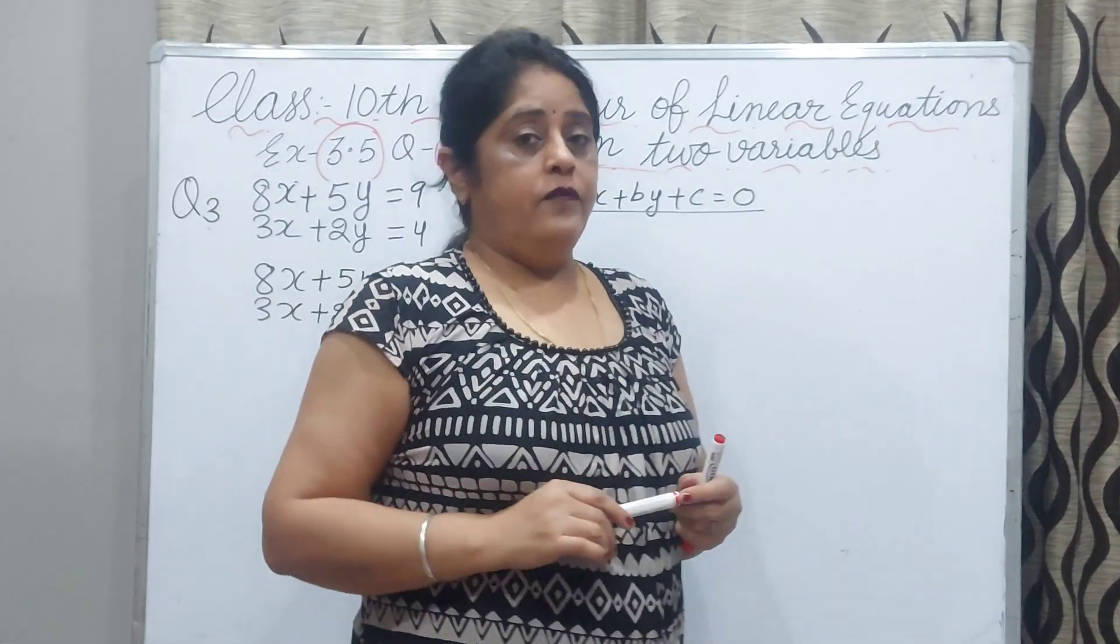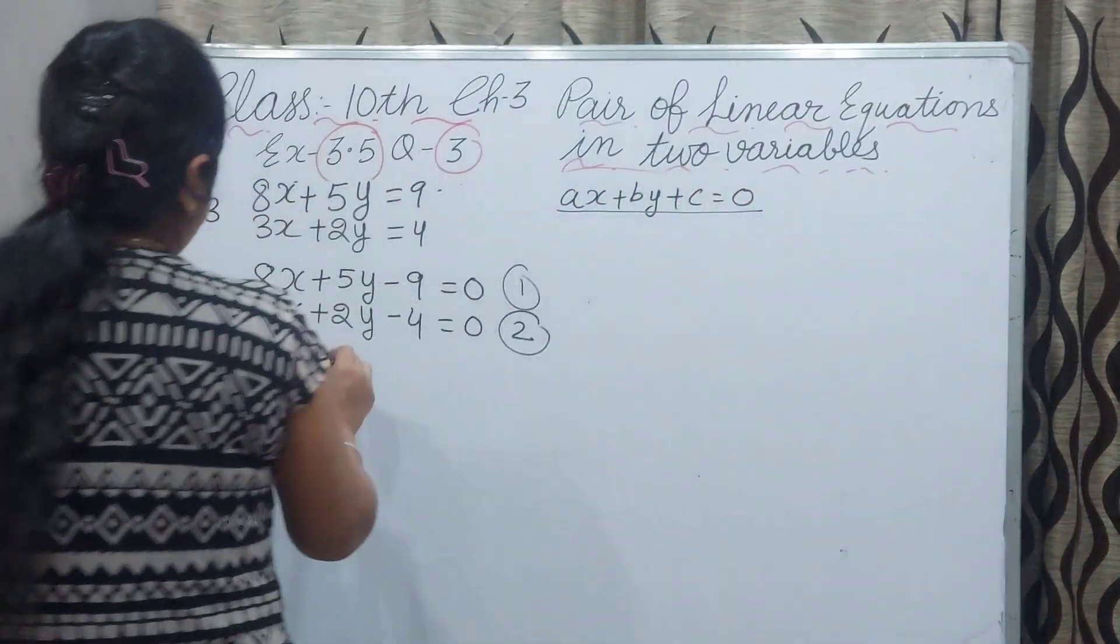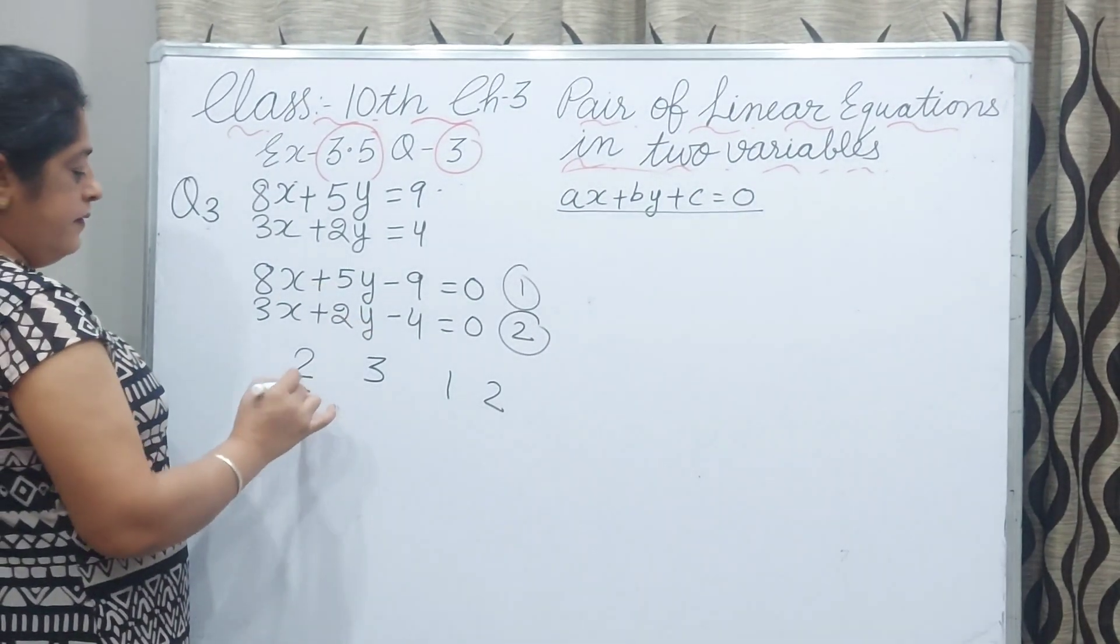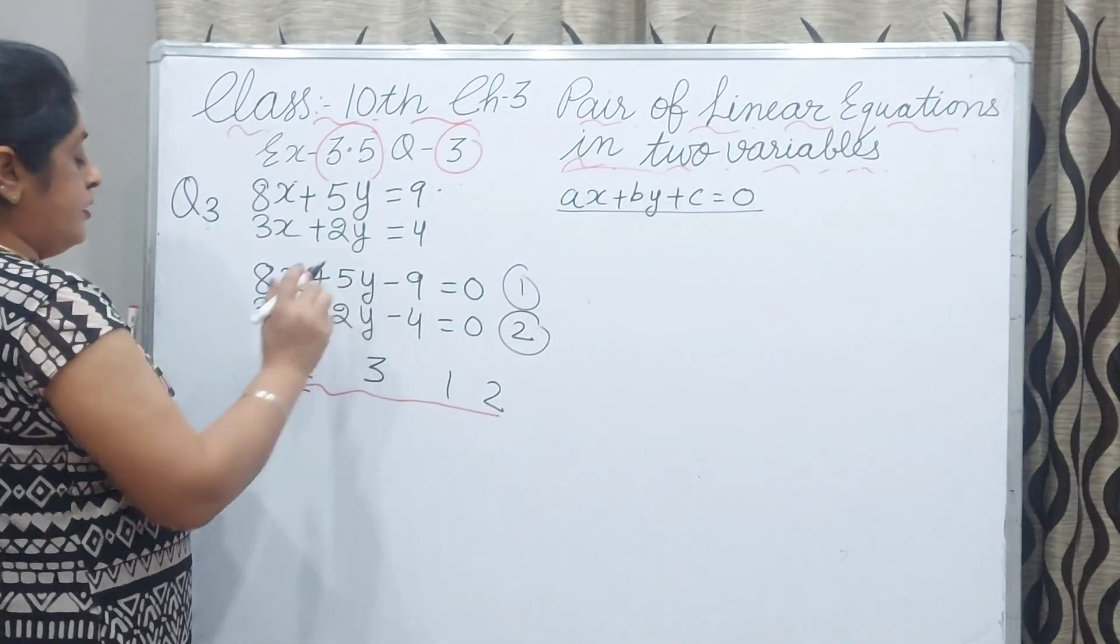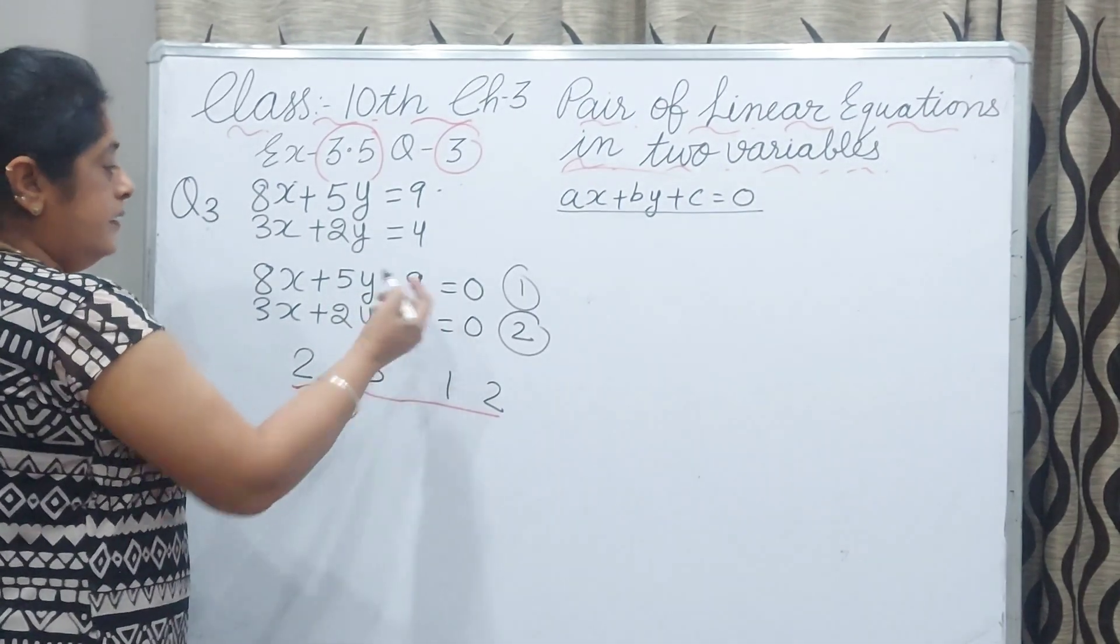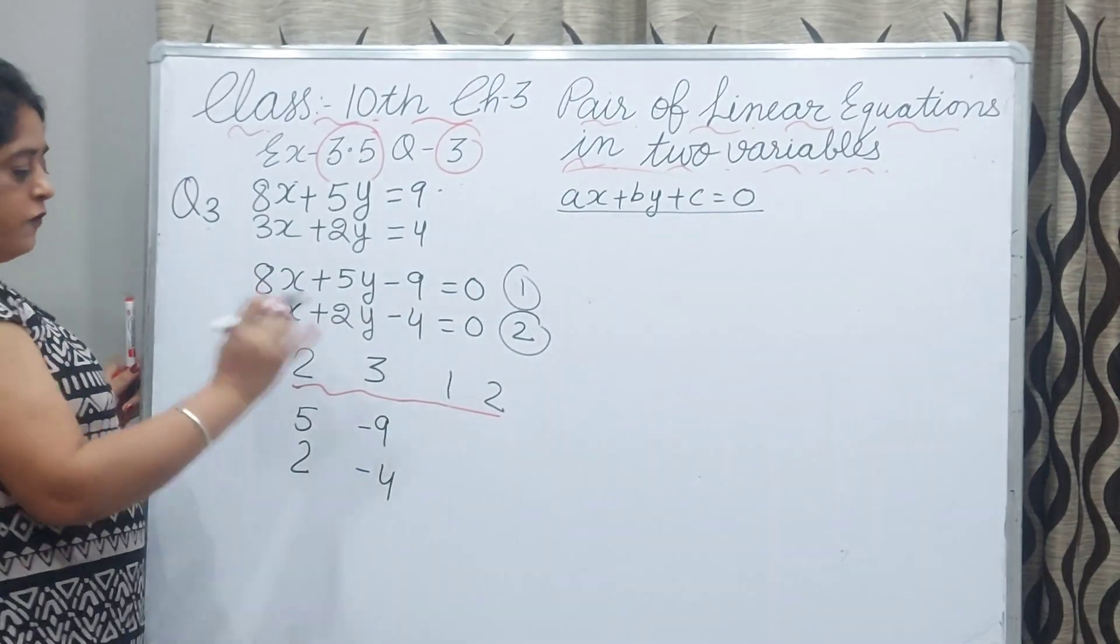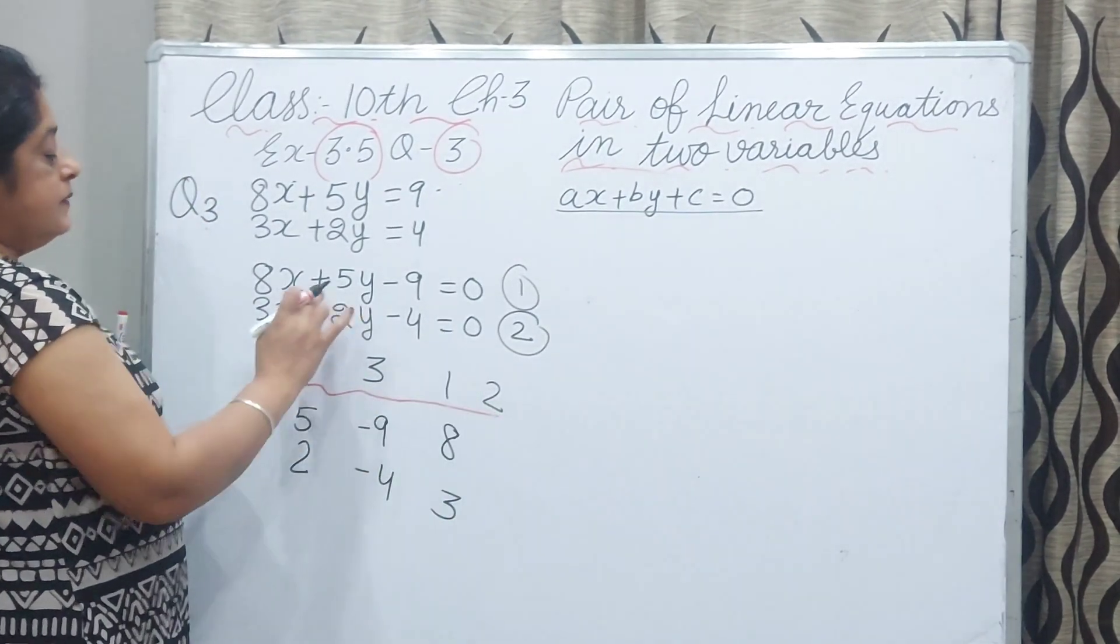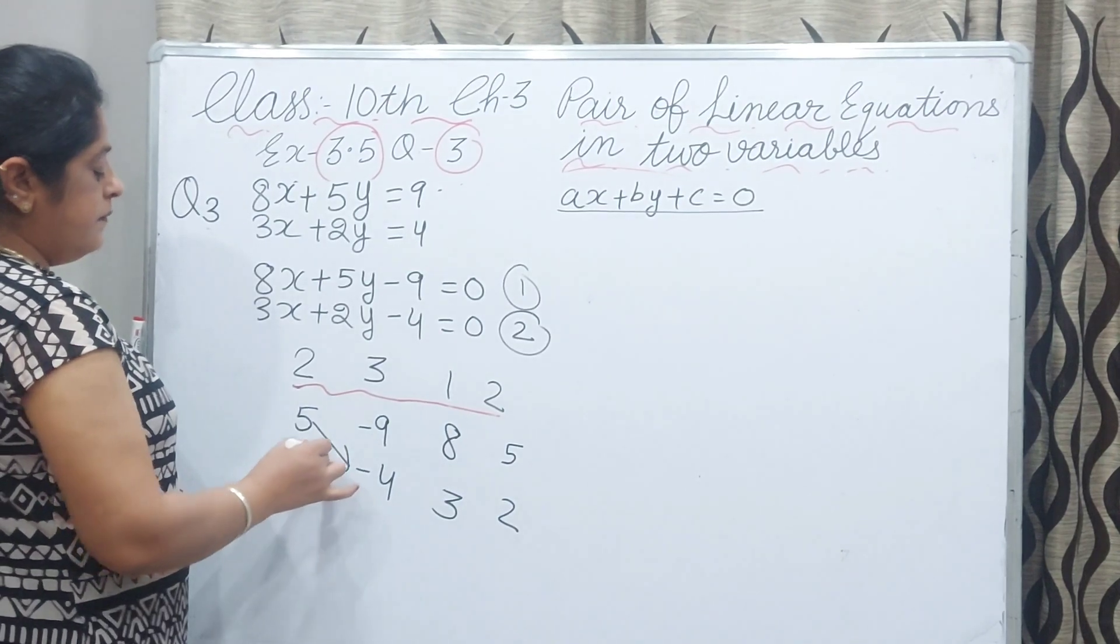I have told you for simple method you have to write the coefficients: 2, 3, 1, 2 for coefficient of y from both equations. Second, this coefficient is 5 right here. First I underline this. Y coefficient is 5 and this second equation is 2. Now third, this coefficient is minus 9 and minus 4. First coefficient is from first equation 8 and second equation 3. Now we will cross multiply for value of x.